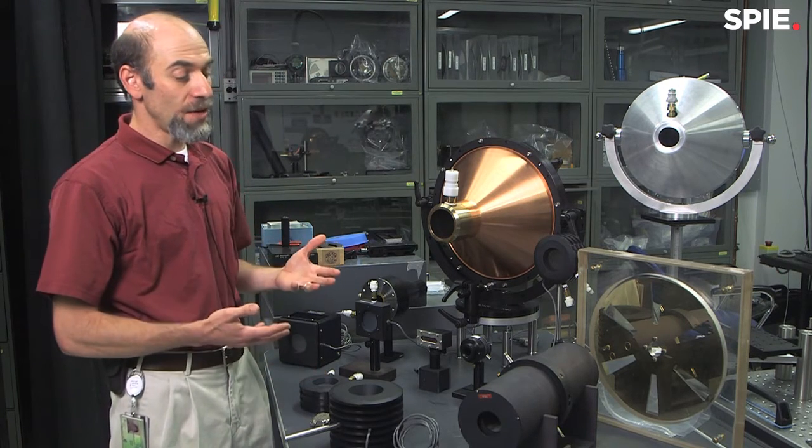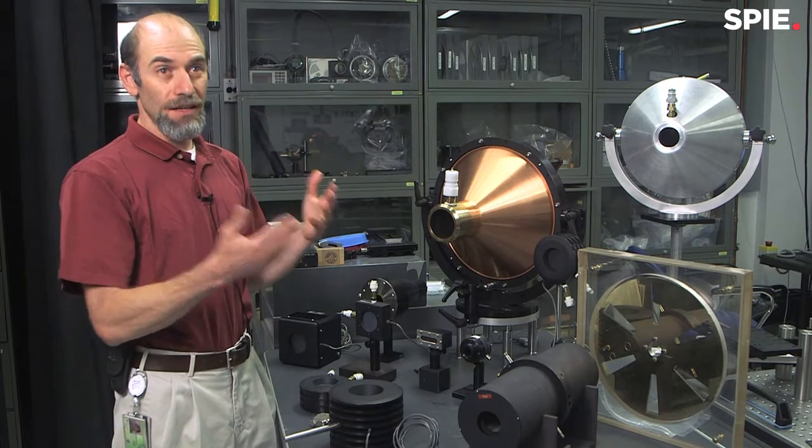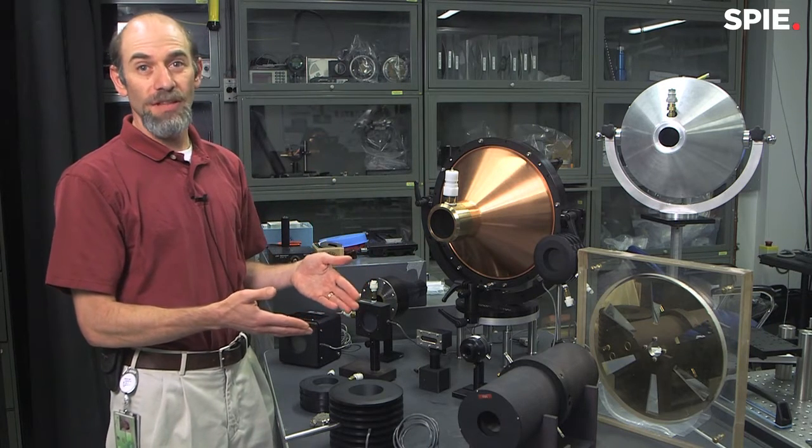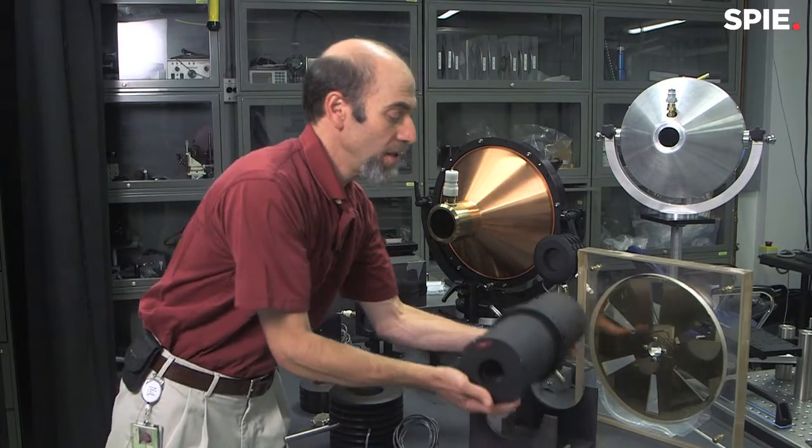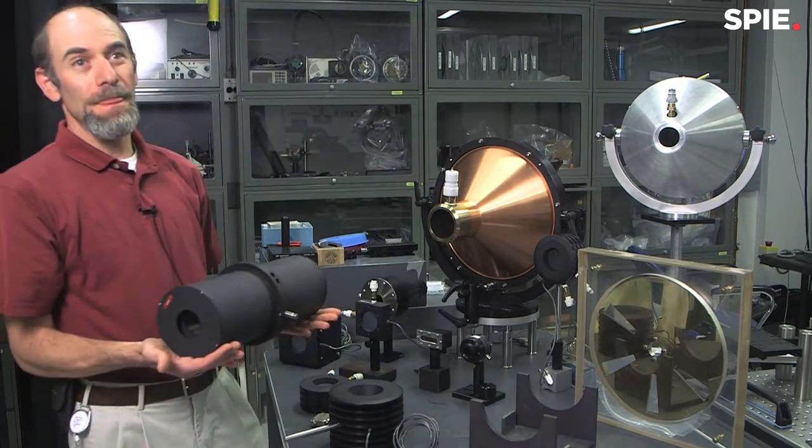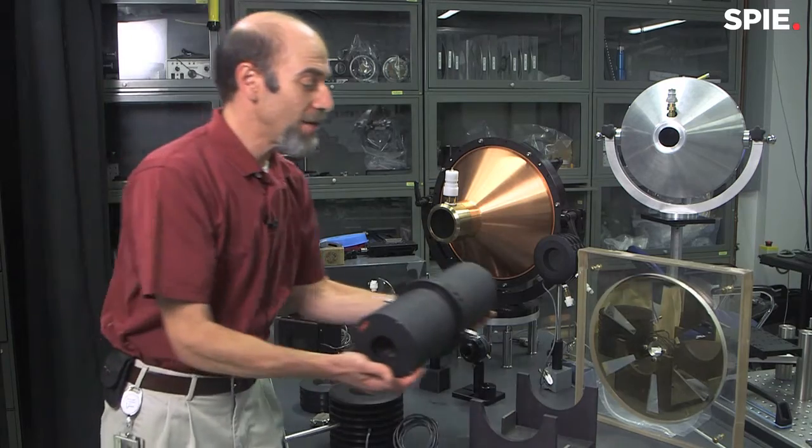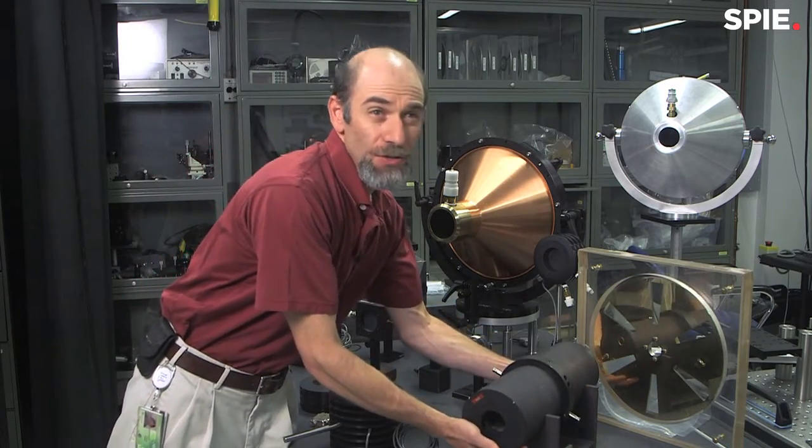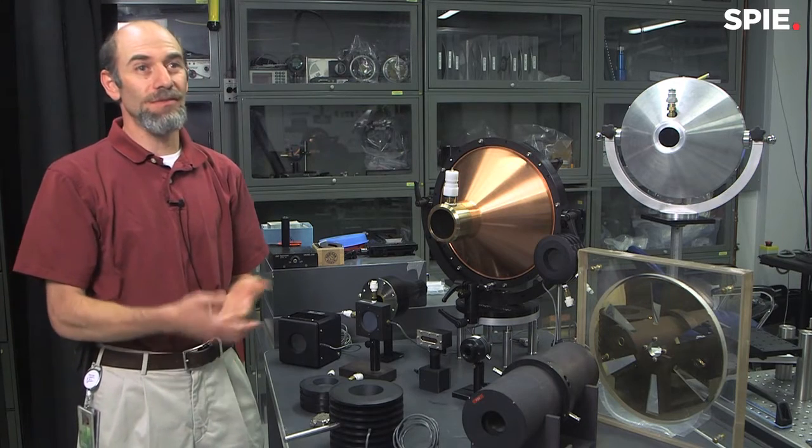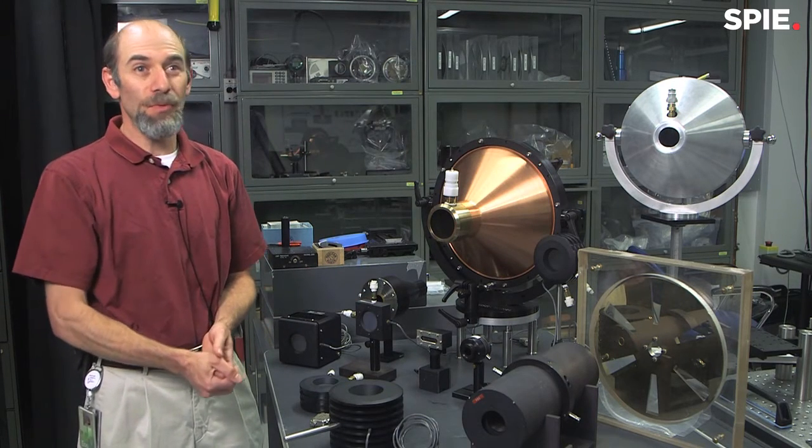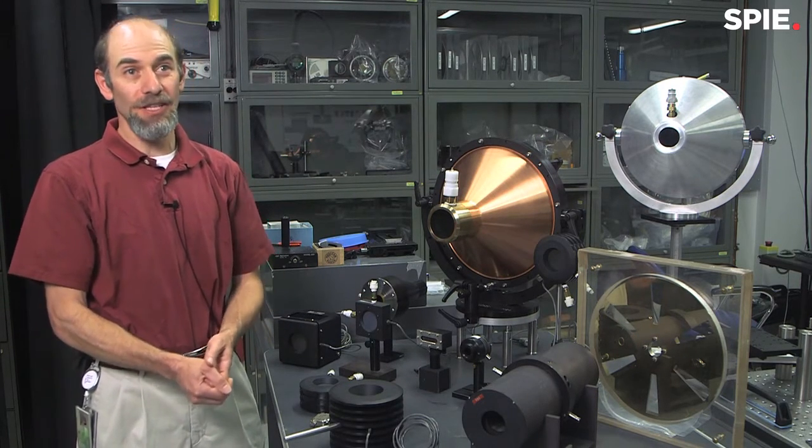The measurements that we do here are all tied to electrical standards that are established here at NIST. Our primary measurement is by calorimetry. Here's an example of our calorimeter. It allows us to accurately measure laser power to about 1%. Most of the applications in this realm, 1% is a pretty good accuracy for these measurements.